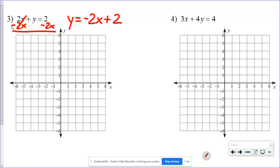Negative 2x plus 2, which means I'm going to start at positive 2 on the y-axis. And my slope is a negative 2 over 1 this time. So it's got to go downhill. Down 2 over 1.